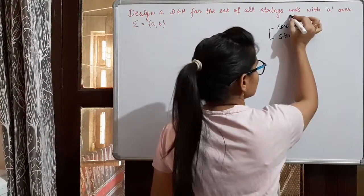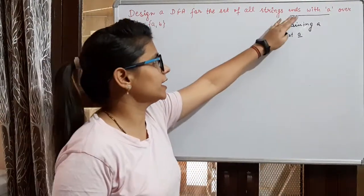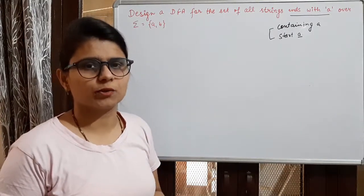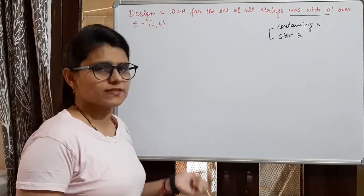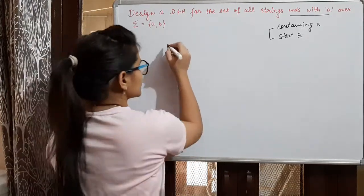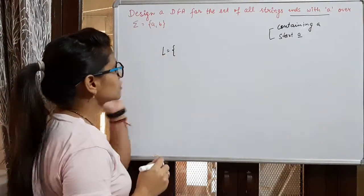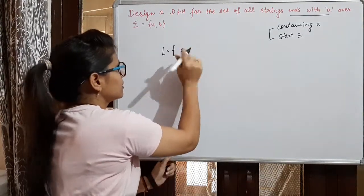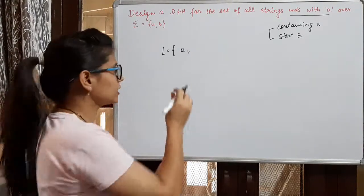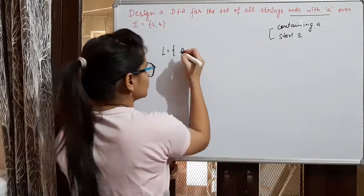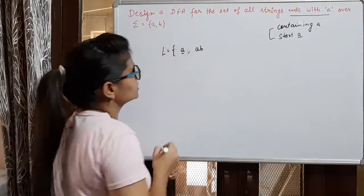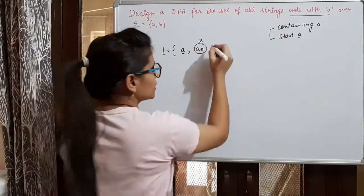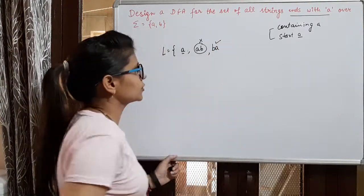Today we design a DFA for strings that end with A. We accept all strings which are generated from our input alphabet A and B, where the string ends with A. For example, A and B does not end with A — it ends with B. But B and A does end with A.